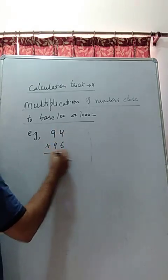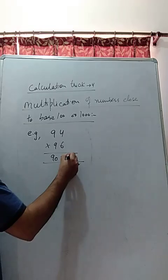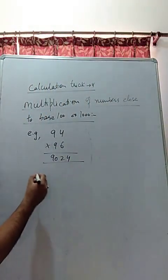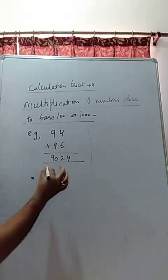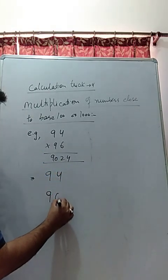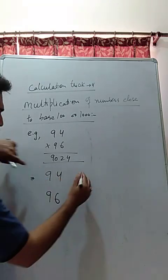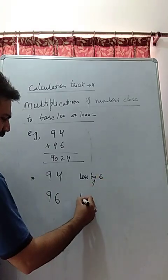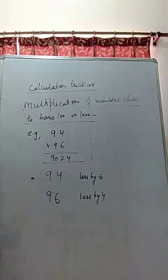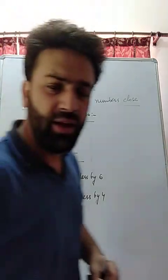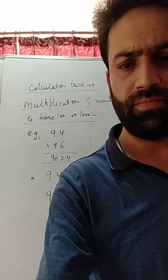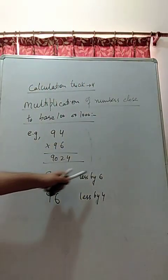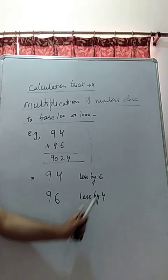For example, I've been asked to multiply these two numbers. I will do it in a minute. My answer is, without any calculator, 9024. Now look how simple it is. What you have to do: take these two numbers. 94 is close to 100, it is less by 6, and 96 is less by 4. So you need to check by how much it is less. It's less by 6 than 100, less by 4 than 100.